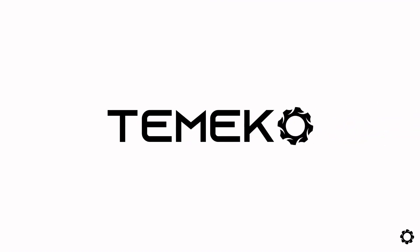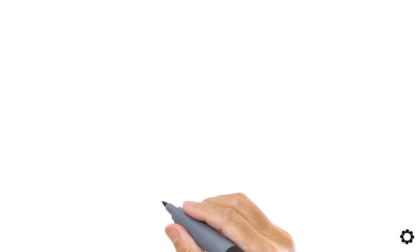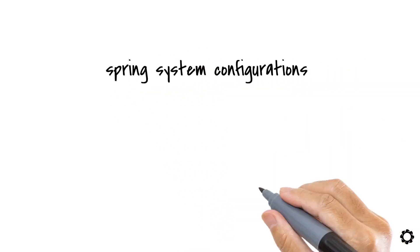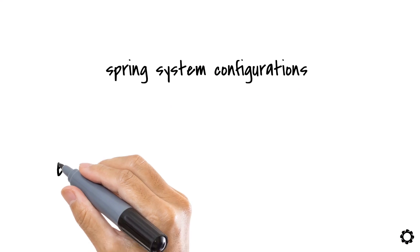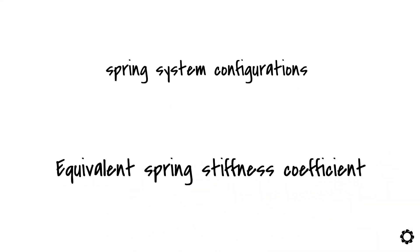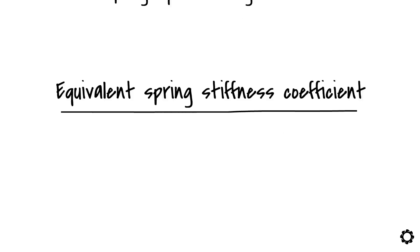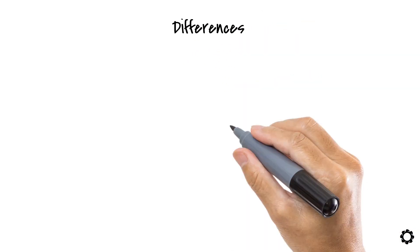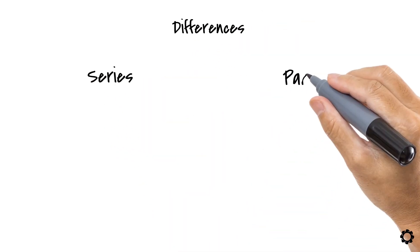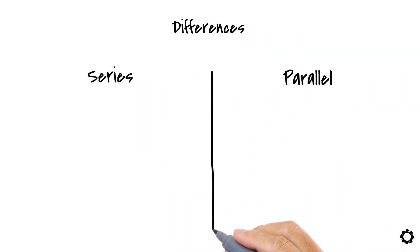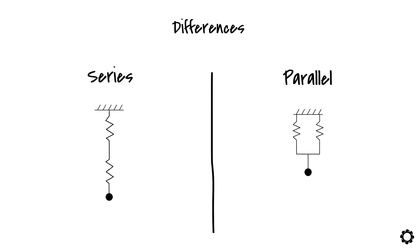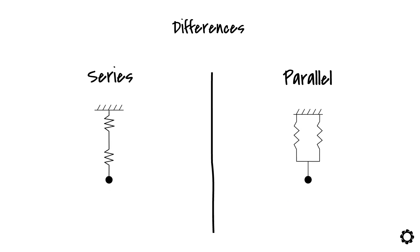Hi, and welcome to Temeco. In this video, we will look at different spring system configurations and learn how to calculate the equivalent spring stiffness coefficient when in presence of these apparently complex systems. At the end of the video, we expect you to have a clear understanding of the differences between series and parallel spring configurations, and how to reduce these systems to an equivalent system composed of one spring and one mass. Ready? Let's do some math.